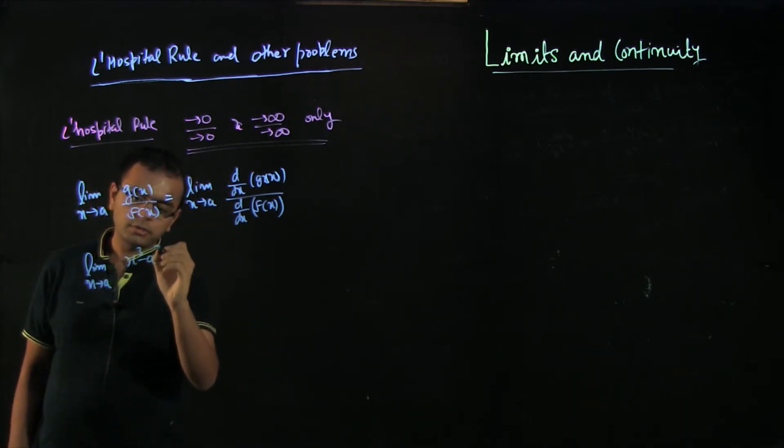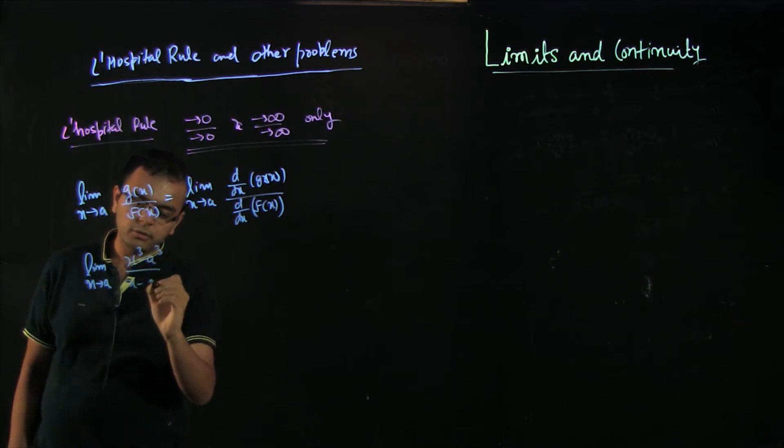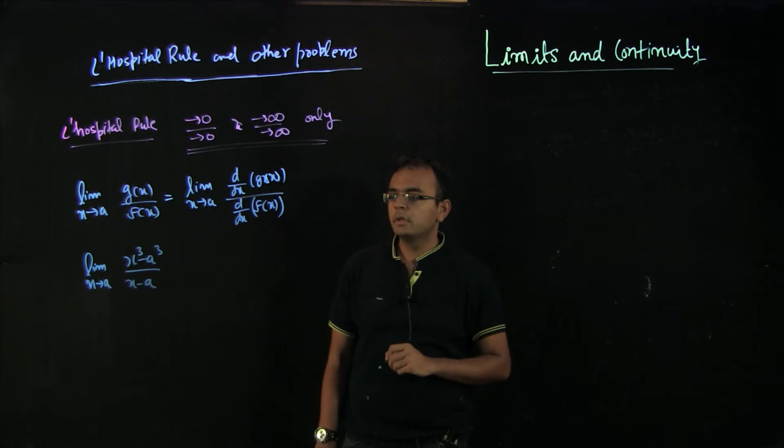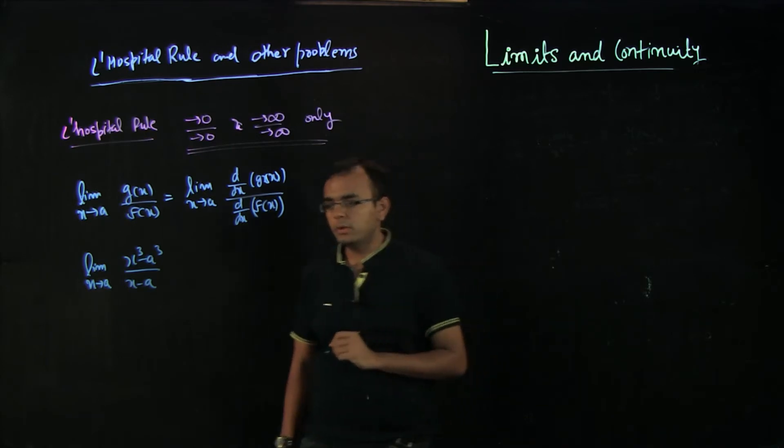Let's say you have a question that limit x tends to a, x cube minus a cube by x minus a, and we have discussed this problem in one of the videos. What should we do to get the answer? We were factorizing the problem. If we substitute x equal to a, this is a 0 by 0 problem, so we can apply L'Hopital rule.